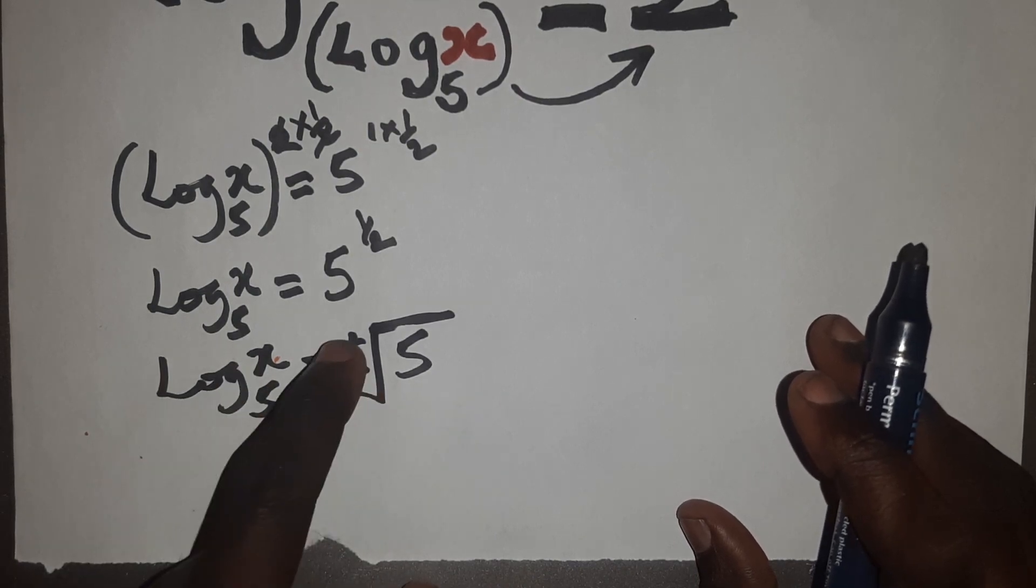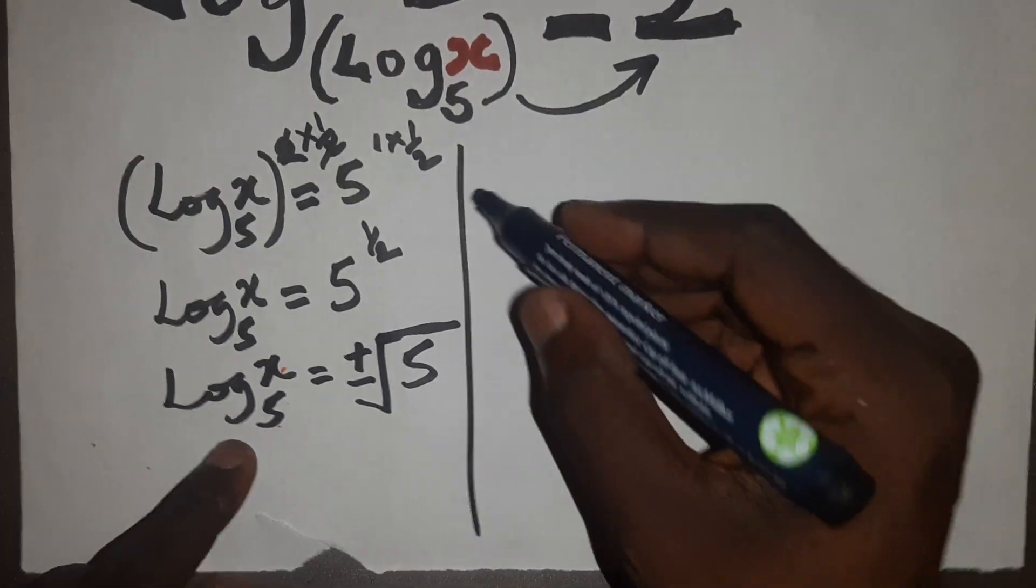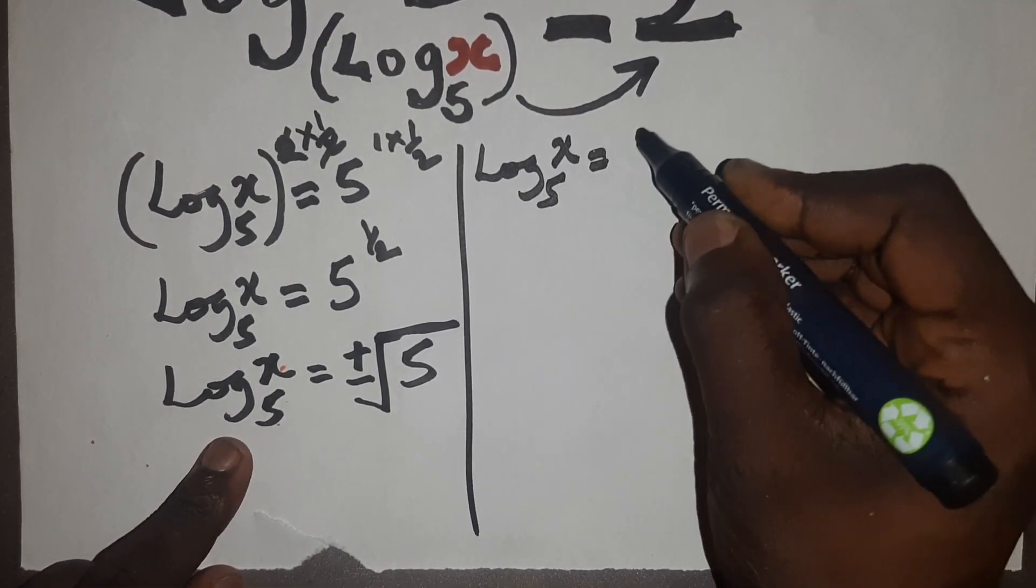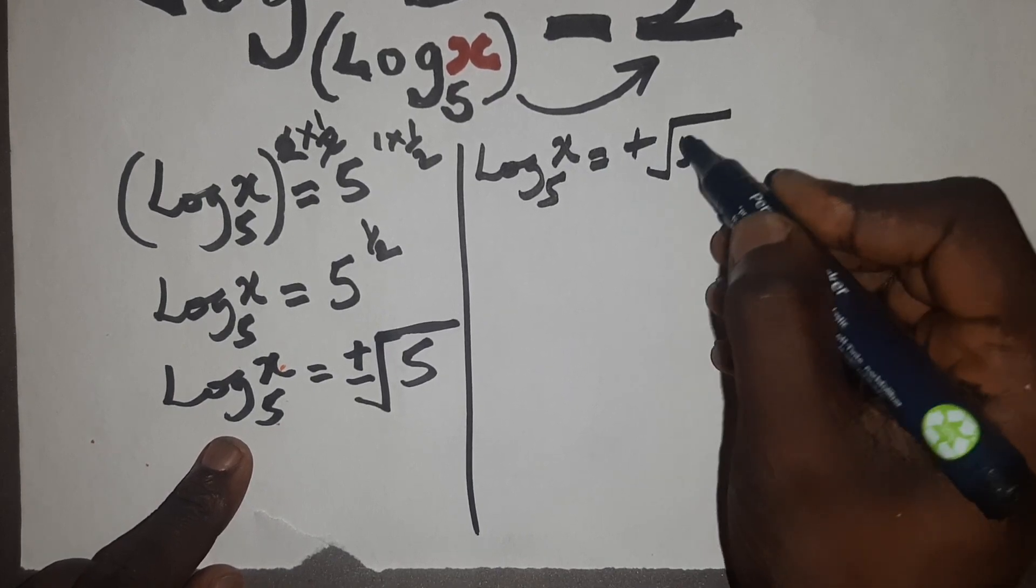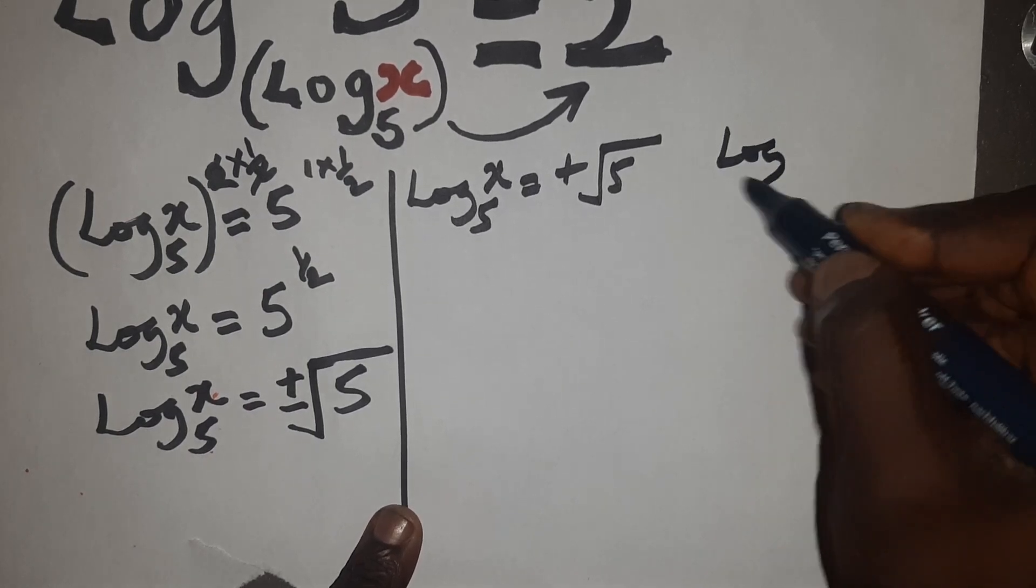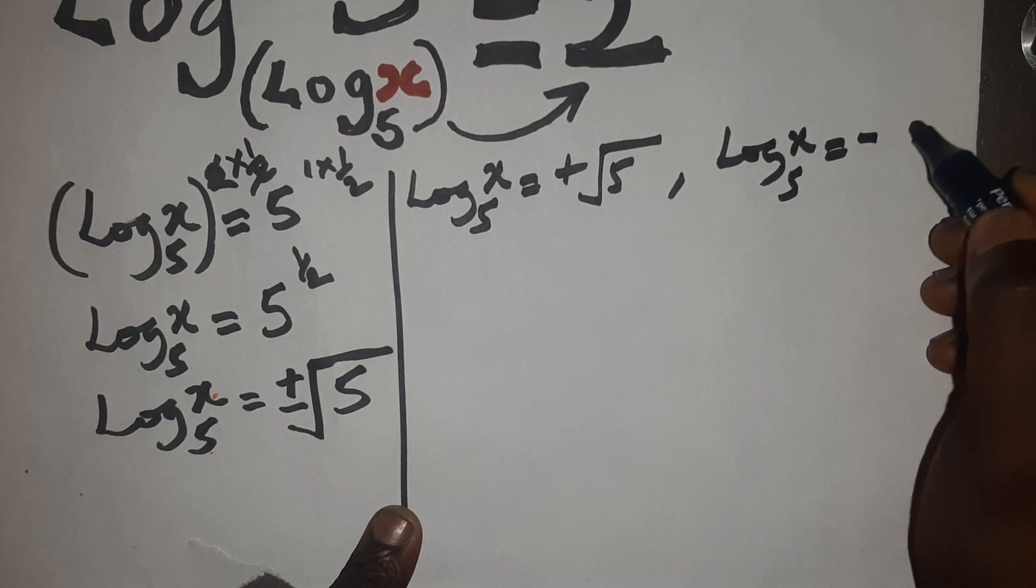Of course, we have log x base 5 equals to plus or minus root 5. So it can now be equal to first case log x base 5 equals plus root 5, and also log x base 5 equals to minus root 5.